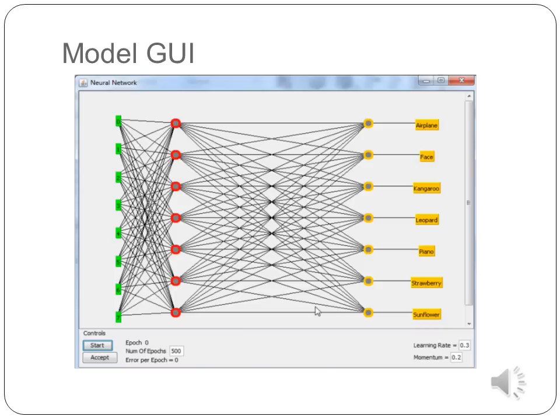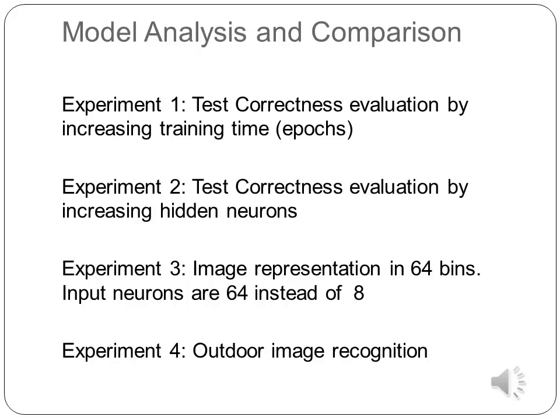The learning rate is another option in the MLP classifier, specifying the amount the weights are updated. Momentum specifies the momentum applied to the weights during updating. The normalized attributes flag specifies whether attributes should be normalized, which actually improves network performance. Training time is an important parameter specifying the number of epochs that the network should train through.